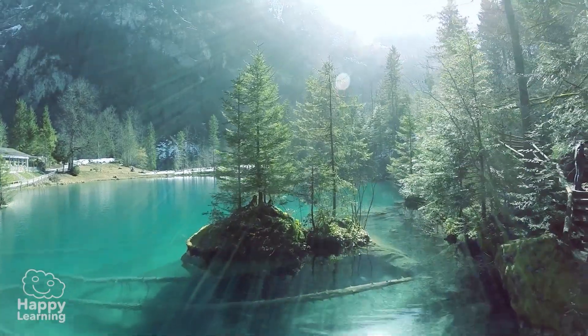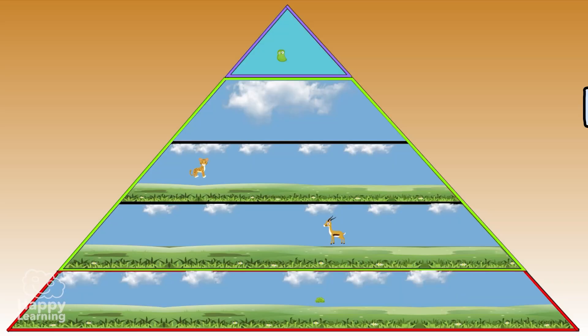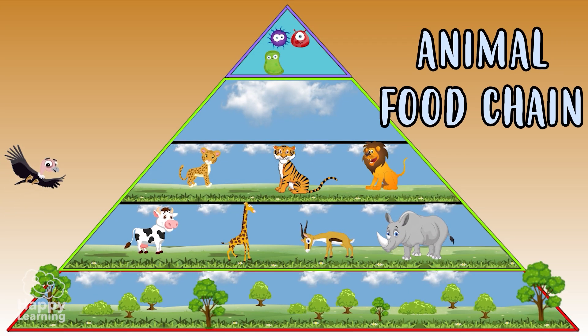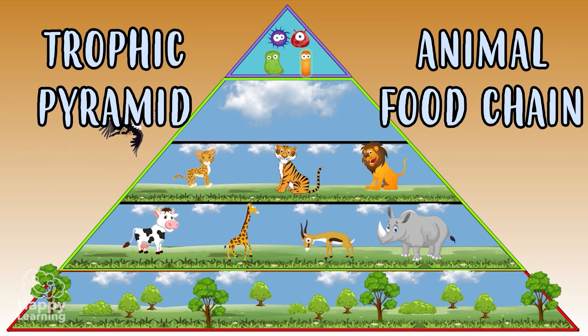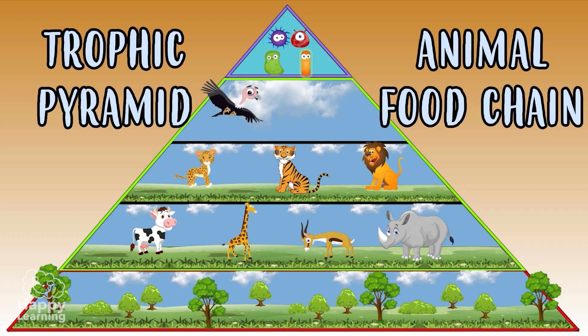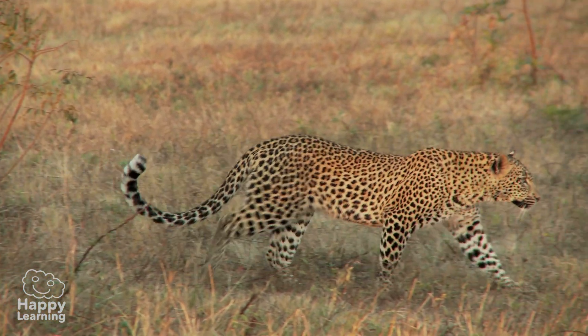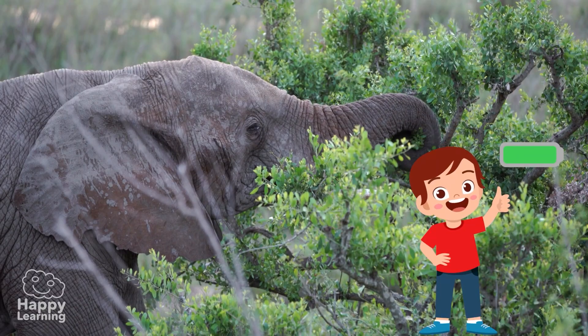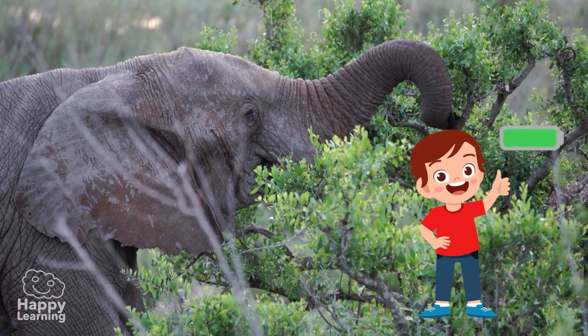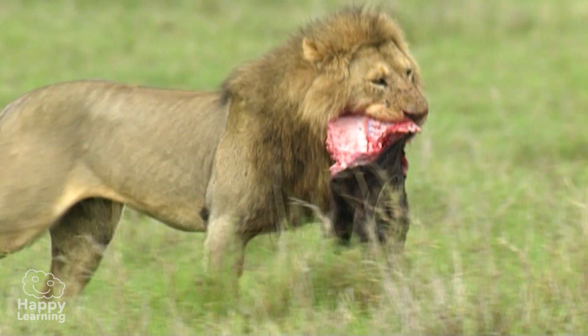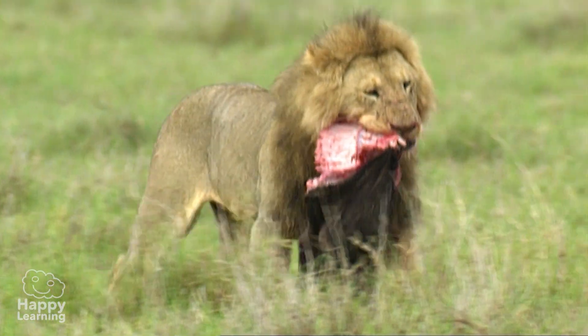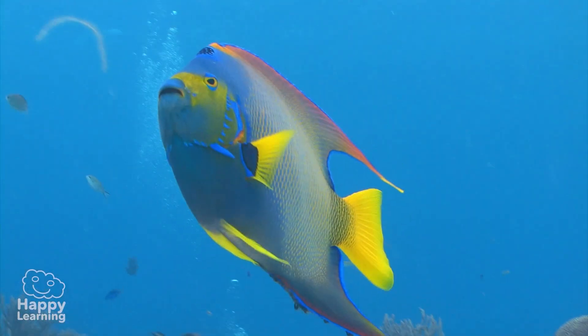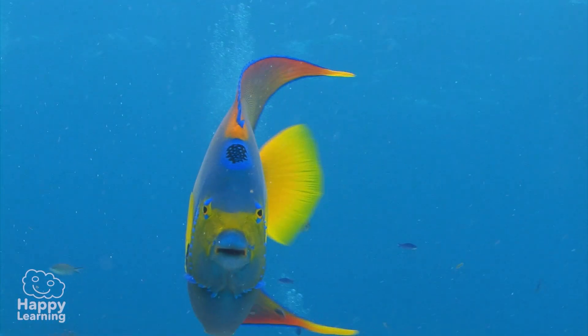Hello friends and welcome to a new Happy Learning video. Today we're going to learn about the animal food chain, also known as the Trophic Pyramid. Every living thing needs energy in order to live, and this energy is found in the food they eat. Living creatures are situated on various levels of the food chain, depending on what they eat.